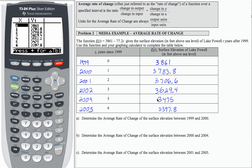So let's use this information to help us respond to parts A, B, and C. First, part A says determine the average rate of change of the surface elevation between 1999 and 2000. So we're going to be working with these two inputs and these two outputs.